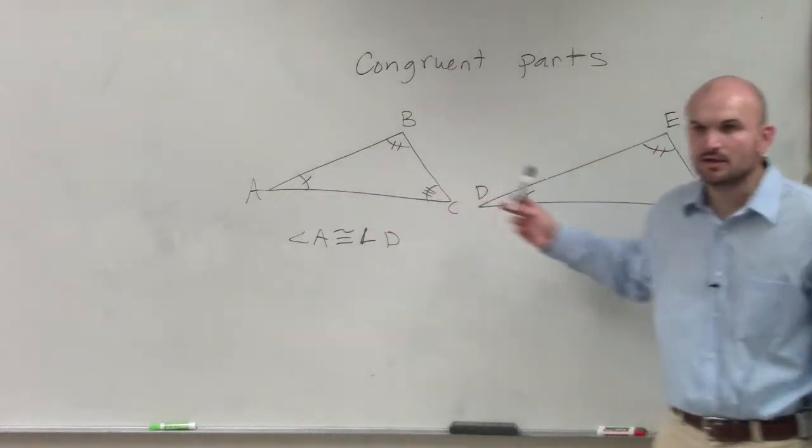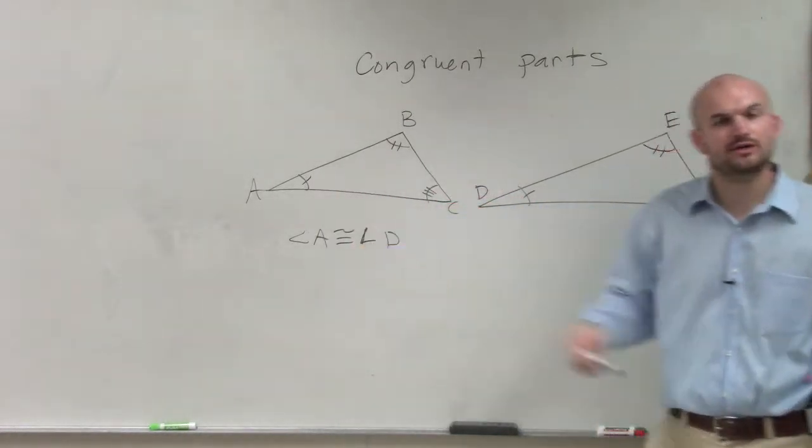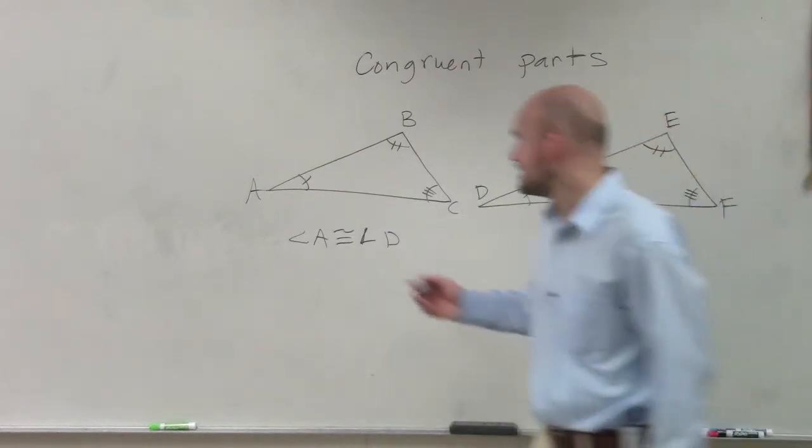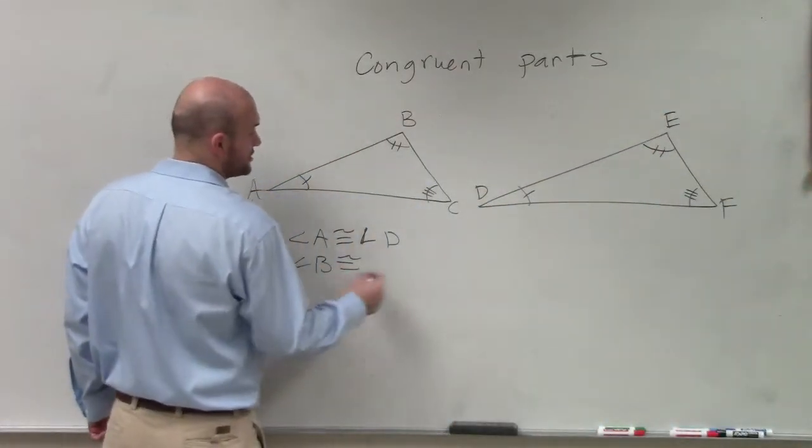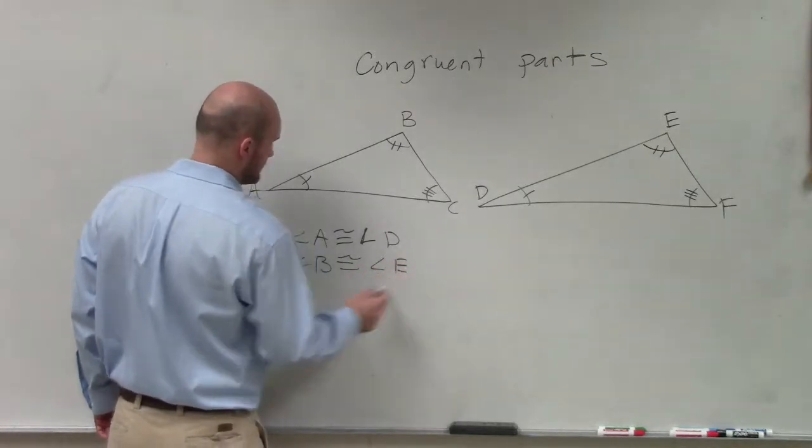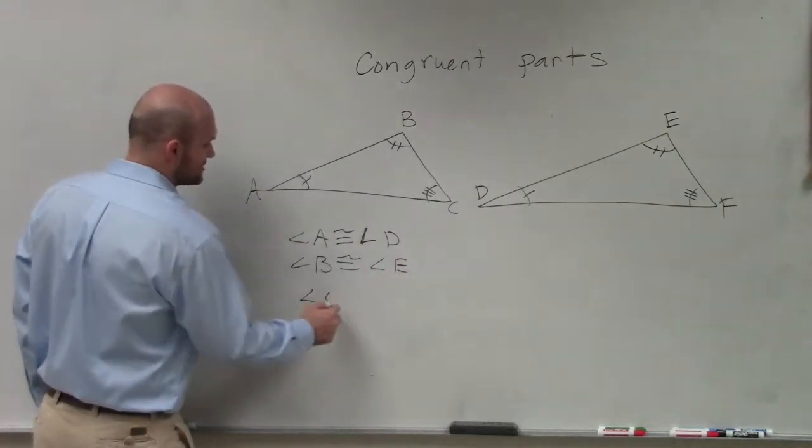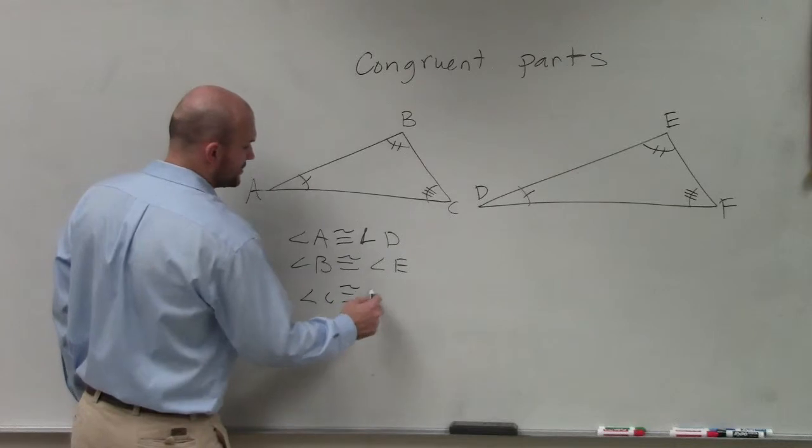One thing, we obviously know that they're congruent on the thing, but they're incongruent in their part. Then you could say angle B is congruent to angle E. And you could say angle C is congruent to angle F.